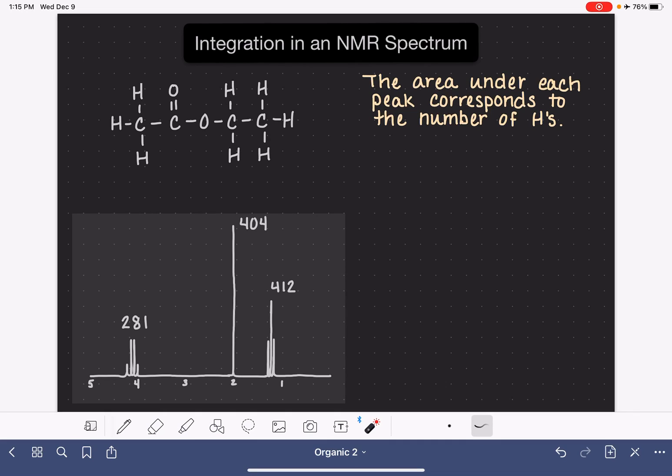In proton NMR, the area under each peak corresponds to the number of hydrogen atoms that are associated with that peak. This is referred to as integration, and in this video I'm going to teach you how to analyze the integrals of an NMR spectrum.